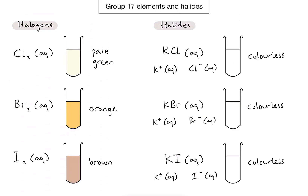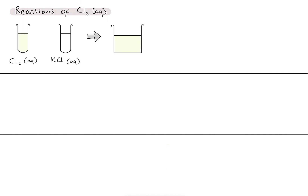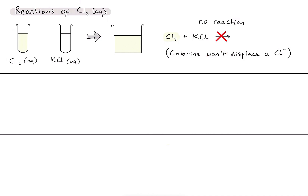Let's start by having a look at the reactions of chlorine solution. First we're going to take chlorine solution and add it to a potassium chloride solution. You'll notice that the resulting solution still has that pale green colour, and because we can observe no visible changes we can infer that no reaction has taken place. In this case, chlorine molecules are not going to displace a chloride ion because they both come from the same element. Even if chlorine did displace the chloride ions, we would still have chlorine and potassium chloride in solution.